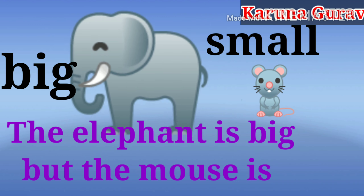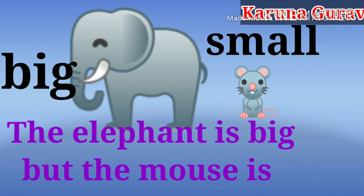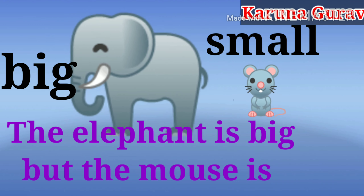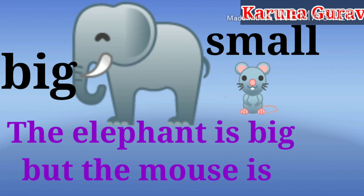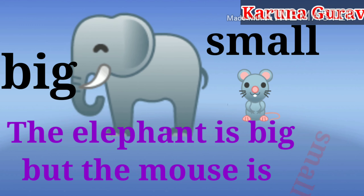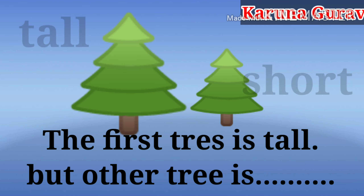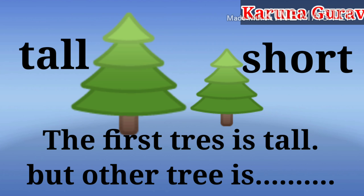Today. Big, Small. The elephant is big, but the mouse is small. Tall, Short. The first tree is tall, but other tree is short.